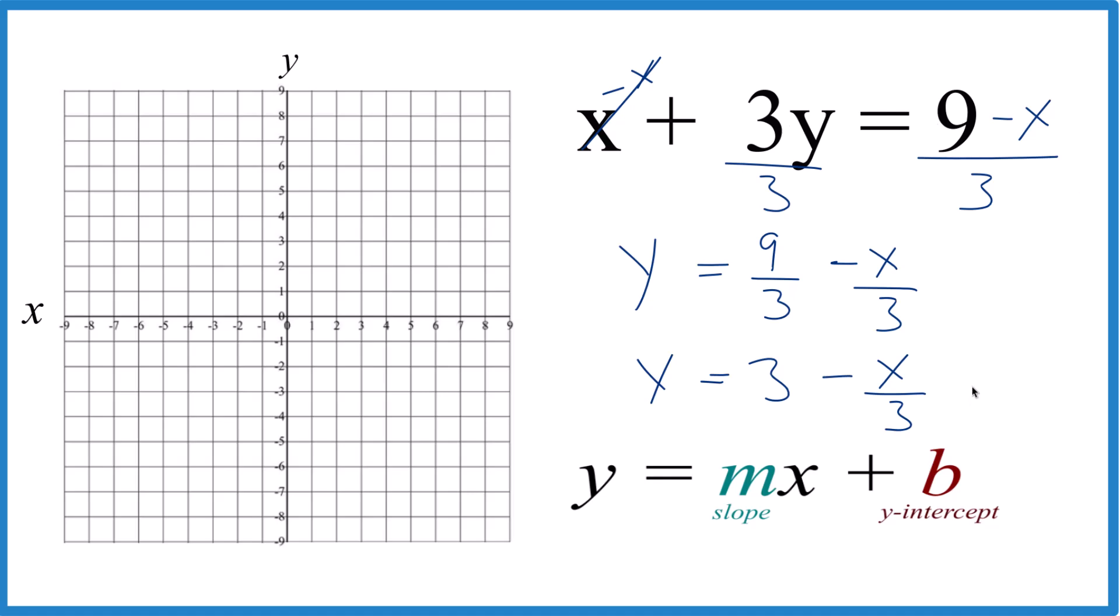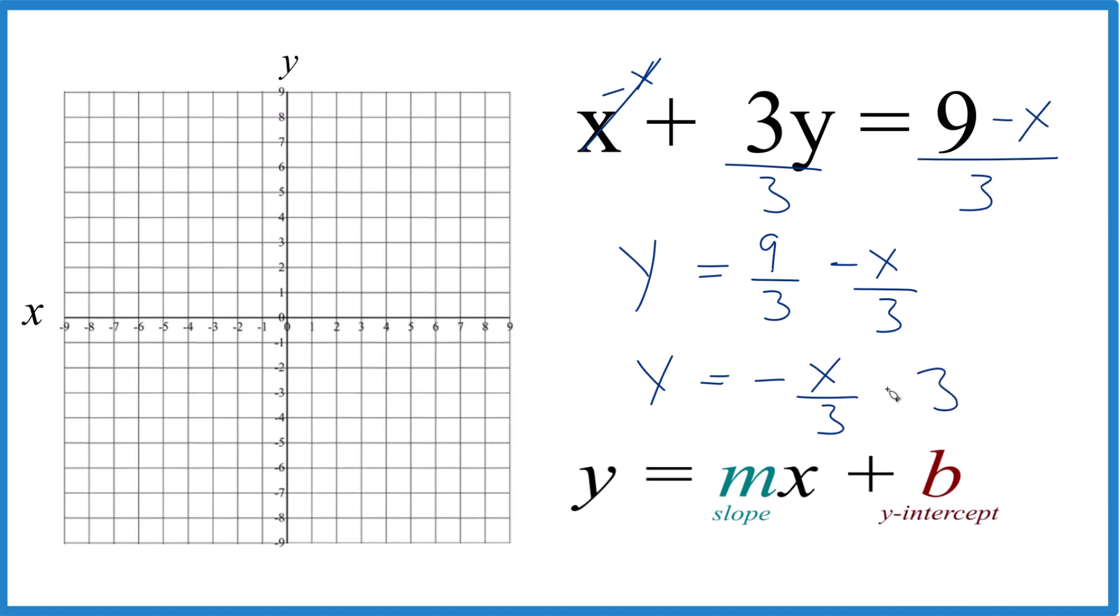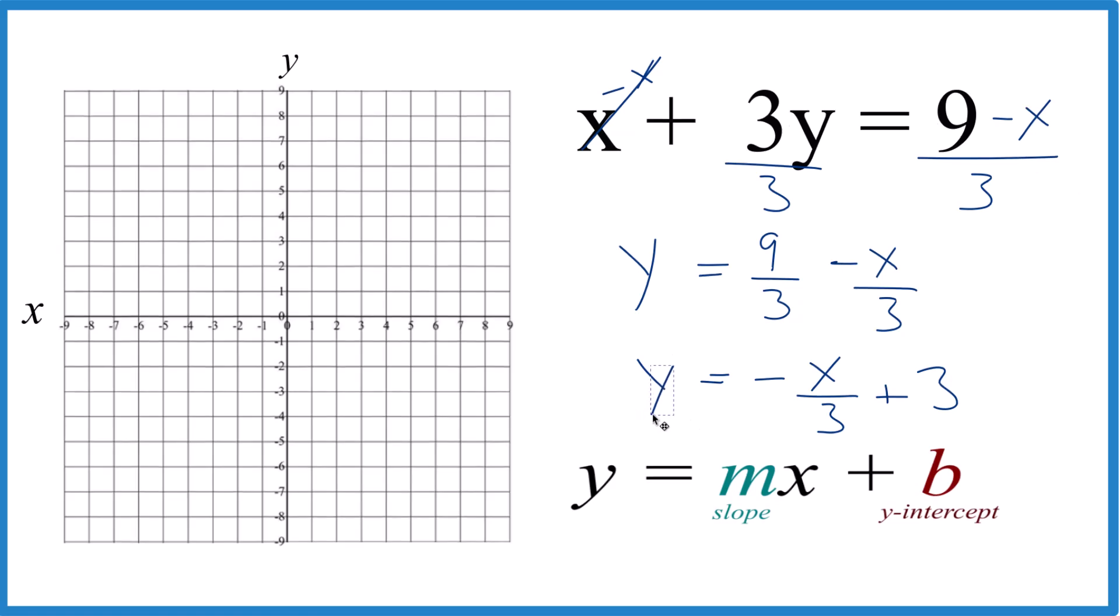But we want to have x first. So we'll just move the 3 over here and put the plus sign. So this is the same thing as we have up here that we started with, but now it's in slope intercept form. And that's kind of nice because what we can do is we can take b, that's the y-intercept. So we can just take this here right there as the y-intercept. That's our first point. We'll cross the y-axis right there.